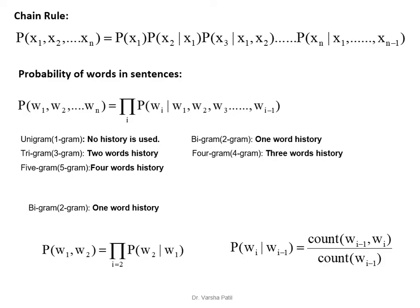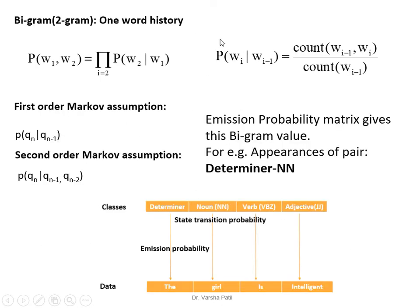The bigram model formula is: P(W1) · P(W2|W1), where P(W2|W1) is the count of occurrences of W1 followed by W2, divided by the count of W1. This is the first-order Markov assumption. For trigram we use two-word history — for example, to determine VBZ we check how many times the determiner-noun-VBZ triple appears in the corpus. The emission probability matrix gives us bigram values such as the appearance of the determiner-noun pair, calculated from the state transition probability matrix.